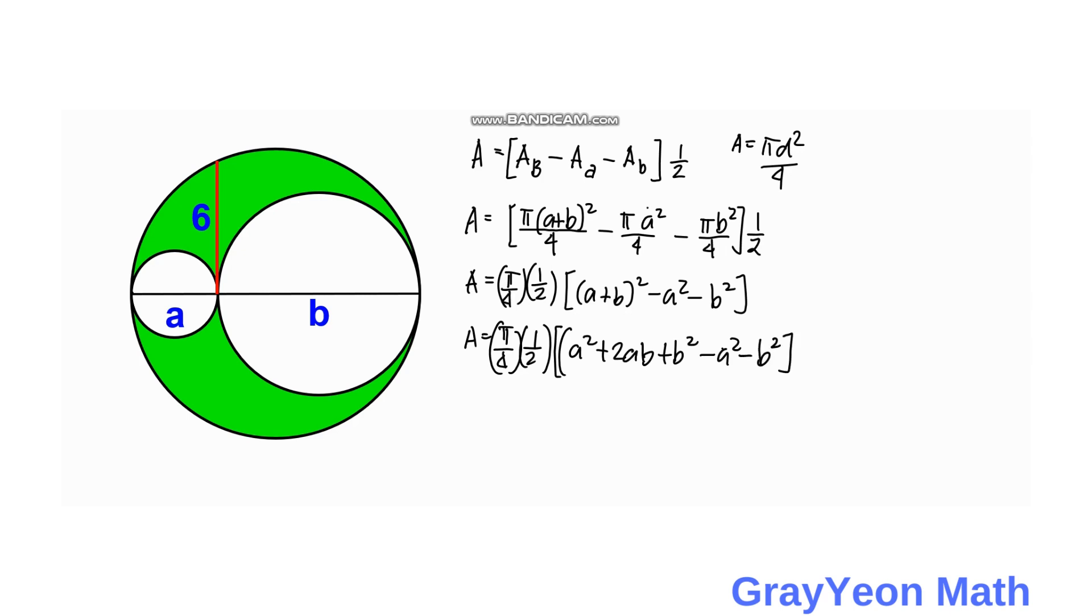This actually cancels. A squared plus 2AB plus B squared minus A squared minus B squared gives us 2AB times pi over 4 times 1/2, but we can actually cancel this, 2 and 2.